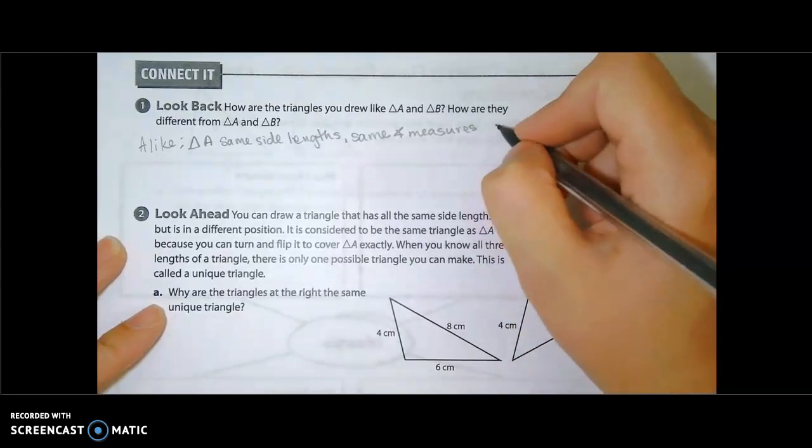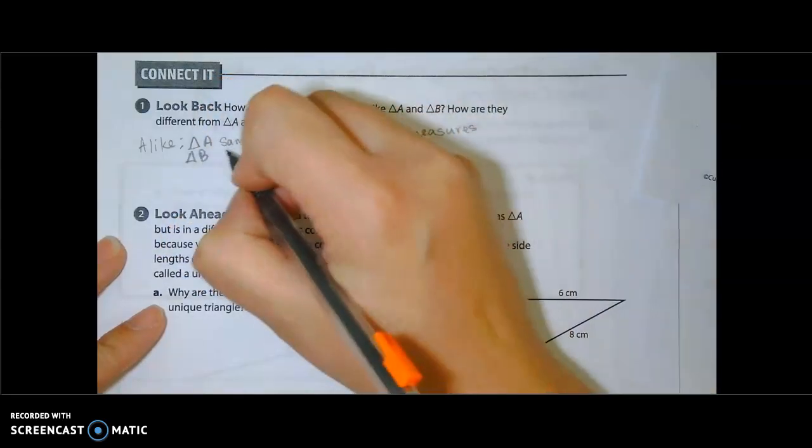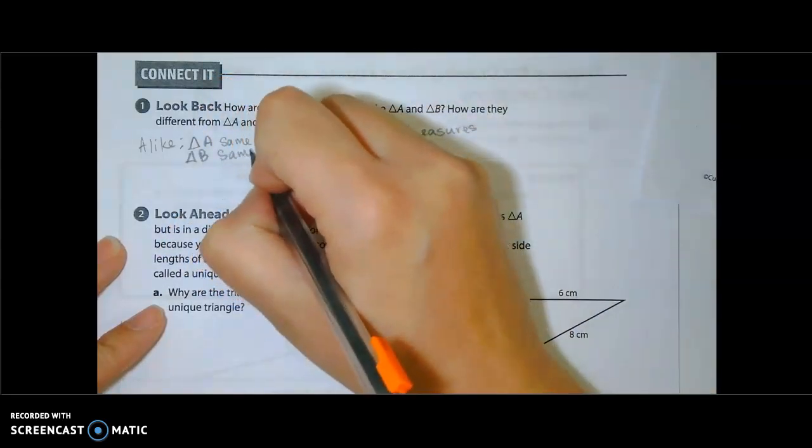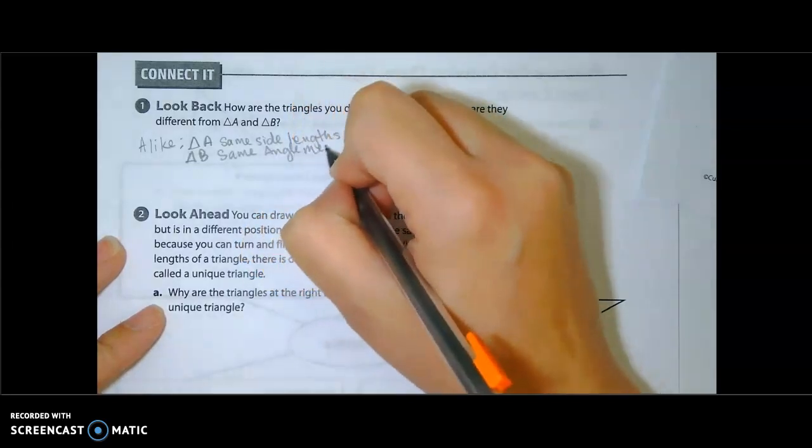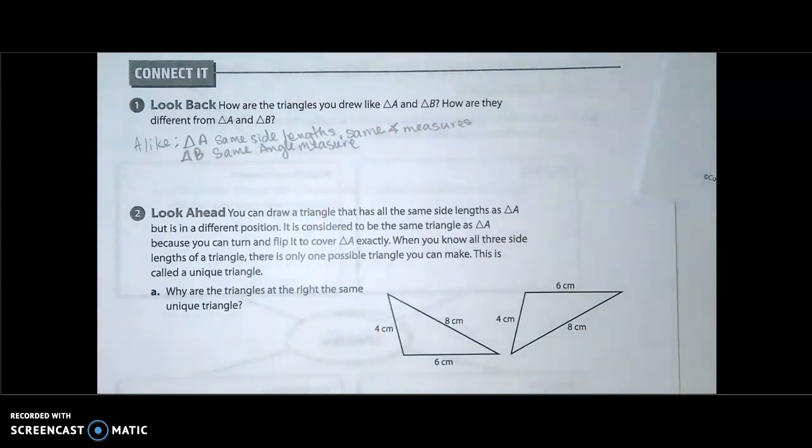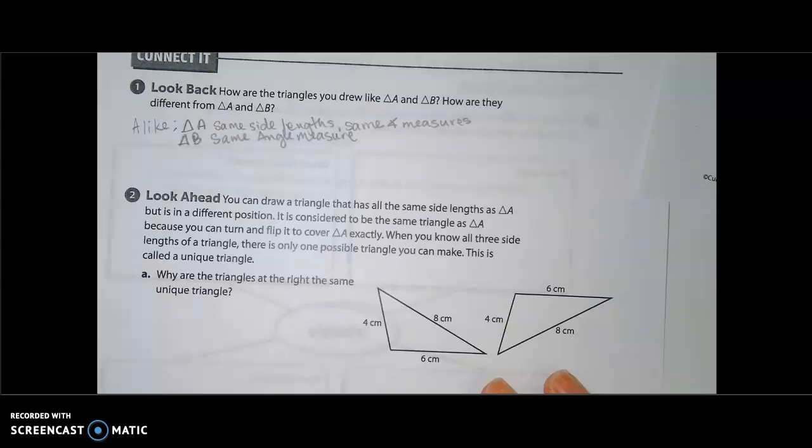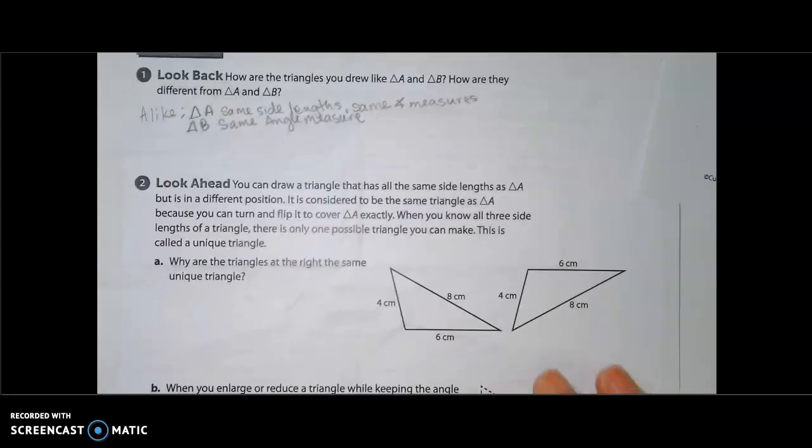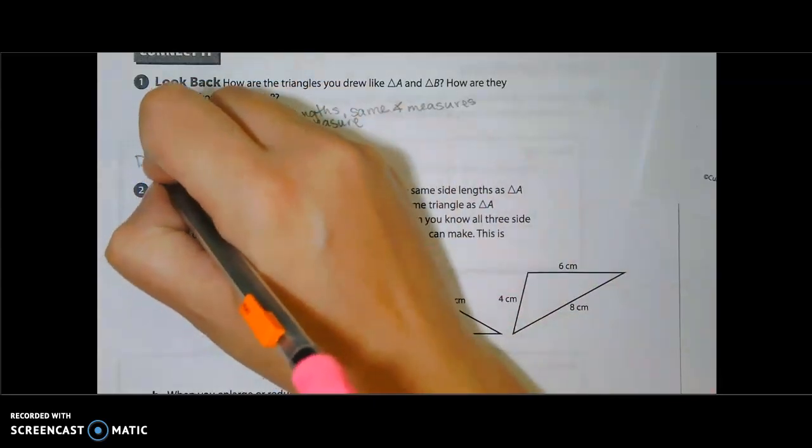When it came to triangle B, we had same angle measures. And some of you may have measured the side lengths and then drew it the same. But what we're supposed to get from here is that if we know the angle measures, we won't necessarily get the exact same side lengths. So how are they different?